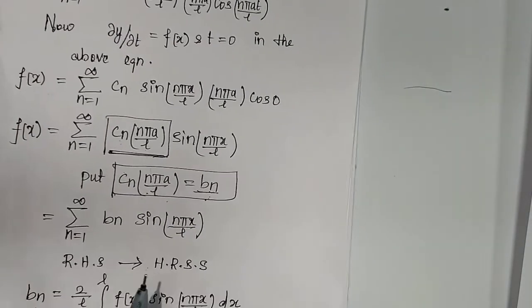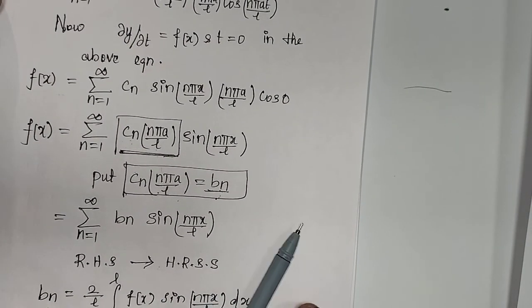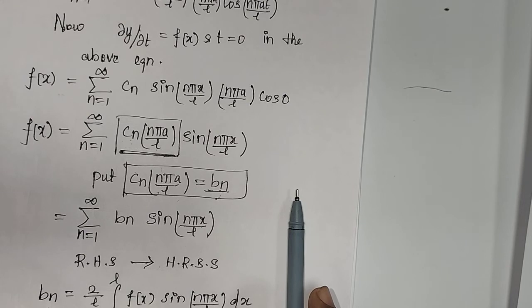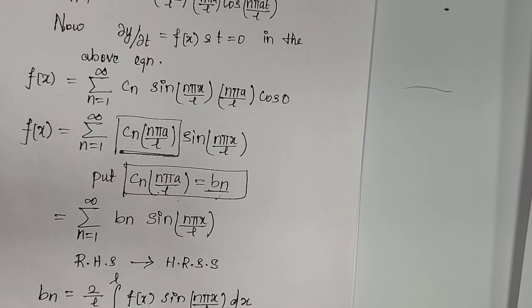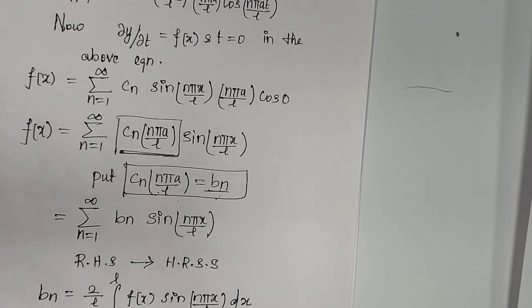In this video, we completed the non-zero velocity working procedure. Previously, we also completed the zero velocity model procedure. Study both well and practice once. In the next video, we will start solving problems. In every problem — whether zero velocity or non-zero velocity — Steps 1 to 4 are common, so I will not re-teach them each time; we will go straight to finding bₙ.